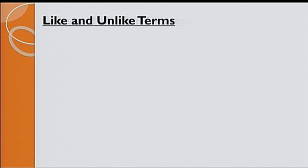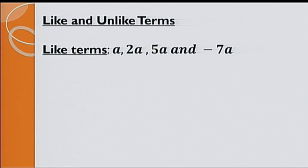Now, let's have a look at like and unlike terms. Like terms have exactly the same variable and also exactly the same variable combination. For example, like terms: a, 2a, 5a and minus 7a are like terms since they have the same variable a. Another example: a squared b, 3a squared b and minus 6a squared b are like terms since they have exactly the same variable combinations. Otherwise, they are called unlike terms.